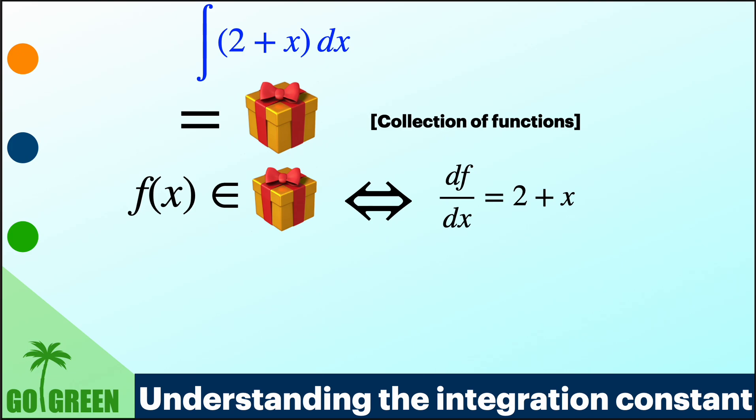This is the answer: a function f(x), if it is inside the box, should give df/dx equal to 2 plus x, and vice versa. If you find any function which is giving df/dx to be 2 plus x, then that function must be inside this box. A function is inside this box if and only if the differentiation gives 2 plus x. Now if we think of the first solution, 2x plus x squared by 2 plus C, C is an arbitrary constant. Therefore we must consider each and every real number to be C, and then you get a collection of functions. That collection is the first box.